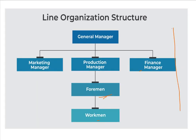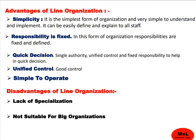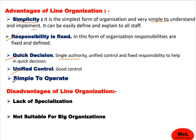Vertically, the line of authority and responsibility is established. The advantages of line organization include simplicity — it is a simple form of organizational structure, very easy to understand and implement, and it is not costly. Responsibility is fixed. Quick decision-making is possible because of single authority and single power. And there is unified control — good control and simple to operate.